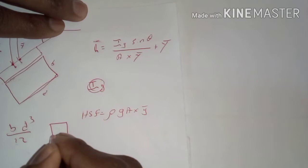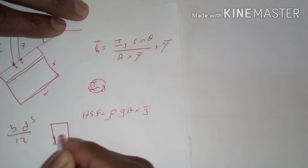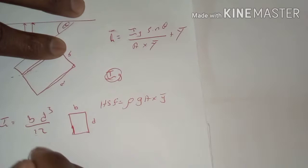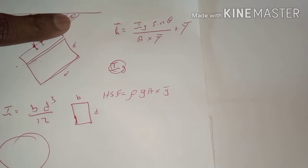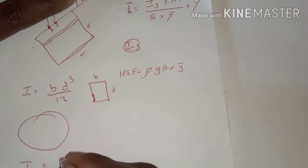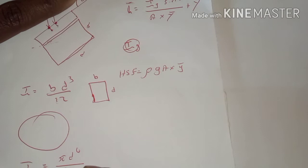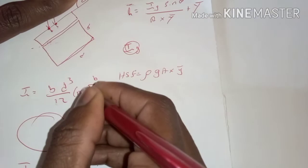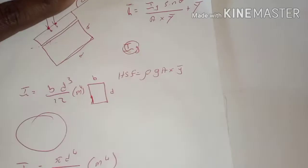This formula, pd³/12, is for a rectangular or square object, where p is one dimension and d is the other. We also have another formula for a circular cross-section, which is πd⁴ divided by 64. The SI unit for moment of inertia is m⁴.